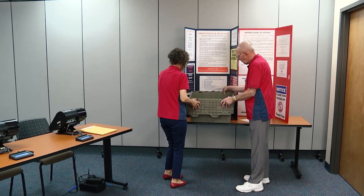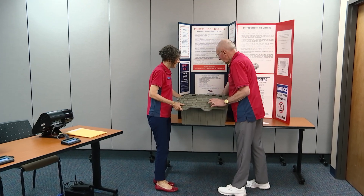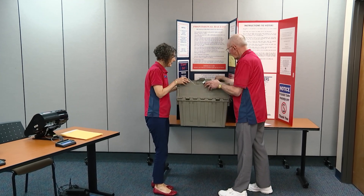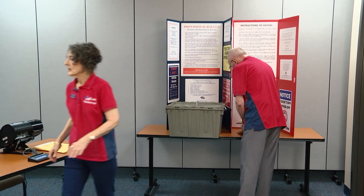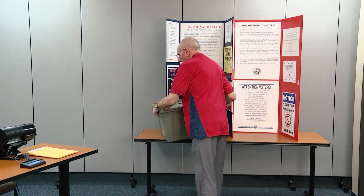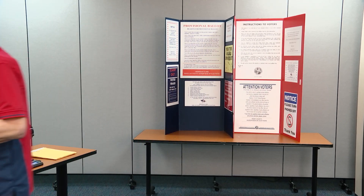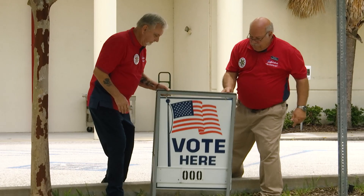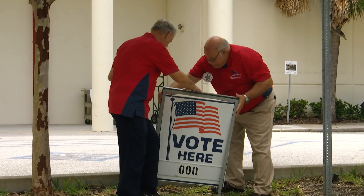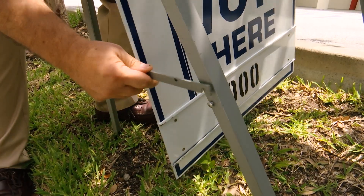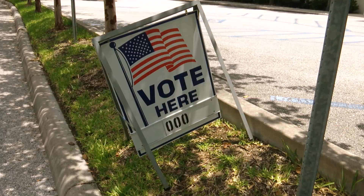Deputies also have election morning responsibilities. One is to hand out the supplies from the supply box and place the empty box on the clerk table so it can be used as the provisional ballot box during the day. Another duty of the deputy is to carry the A-frame to the street curb so that persons driving can see the sign from both directions.